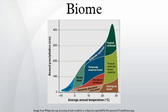The 200 Humid Temperate Domain includes the 210 Warm Continental Division, 220 Hot Continental Division, 230 Subtropical Division, 240 Marine Division, 250 Prairie Division, and 260 Mediterranean Division with their respective Mountain Provinces. The 300 Dry Domain includes the 310 Tropical-Subtropical Steppe Division and 320 Tropical-Subtropical Desert Division. The 400 Humid Tropical Domain includes the 410 Savannah Division and 420 Rainforest Division.